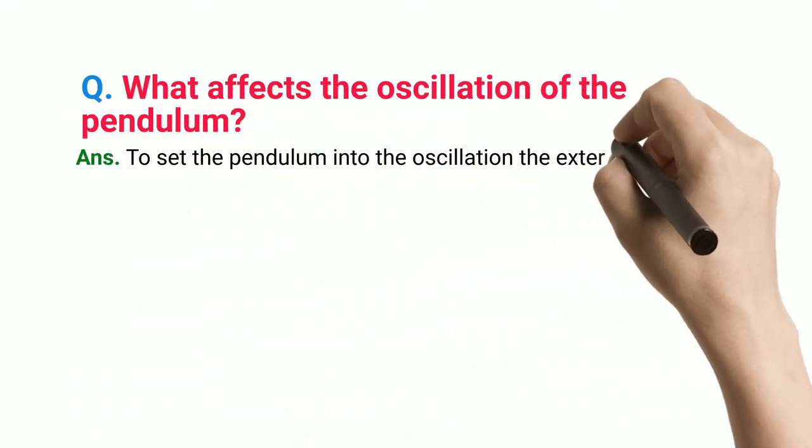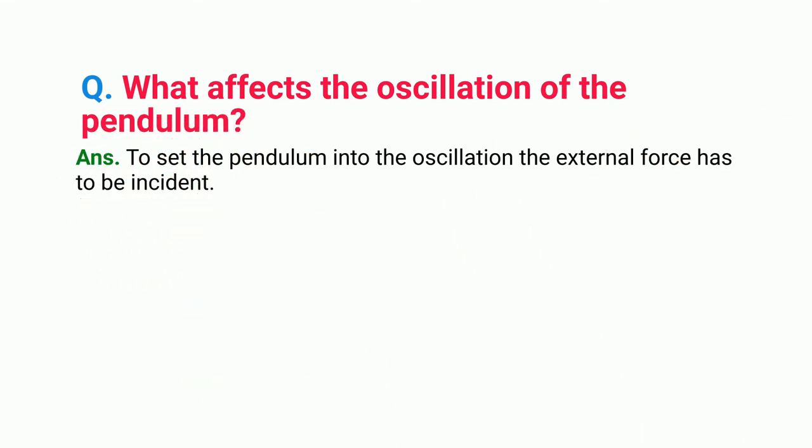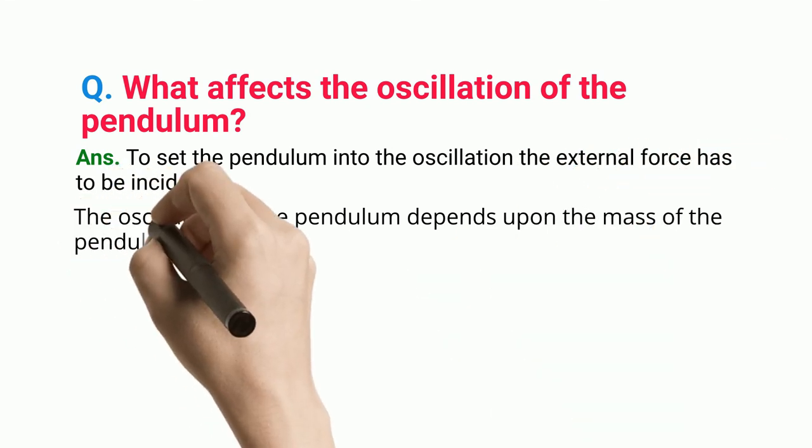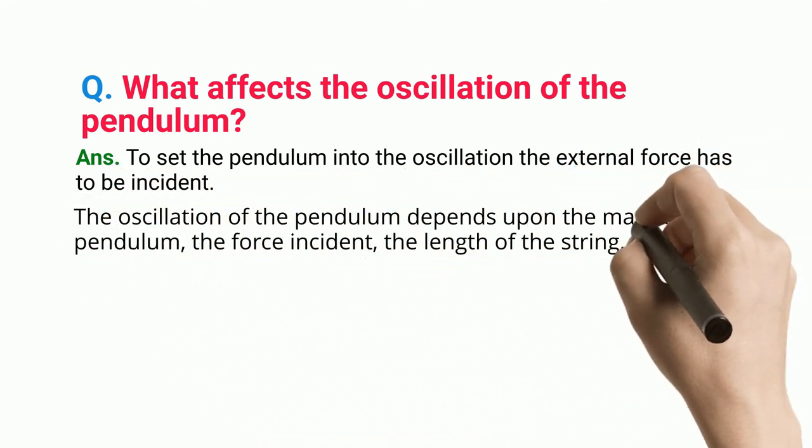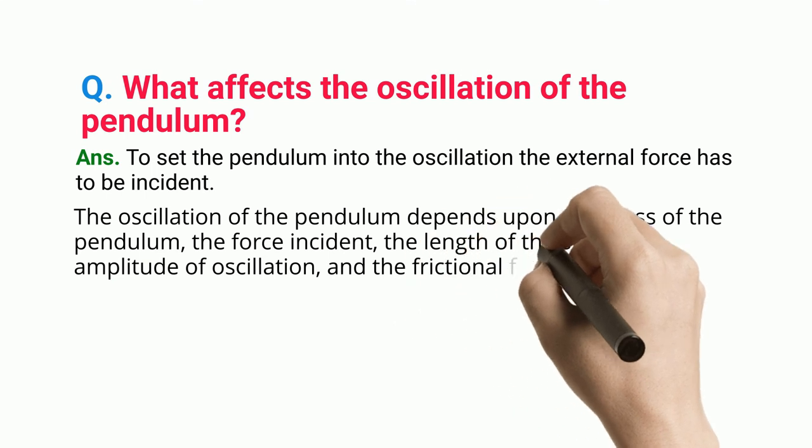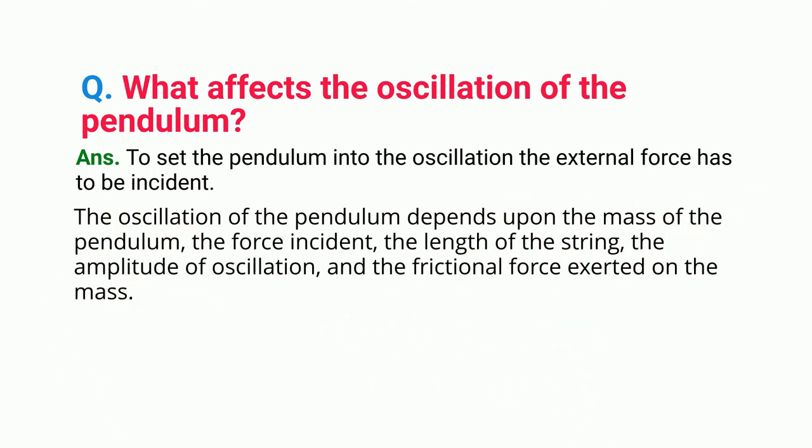Frequently Asked Questions: What affects the oscillation of the pendulum? To set the pendulum into oscillation, external force has to be incident. The oscillation of the pendulum depends upon the mass of the pendulum, the force incident, the length of the string, the amplitude of oscillation, and the frictional force exerted on the mass.